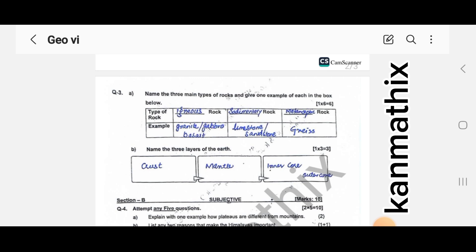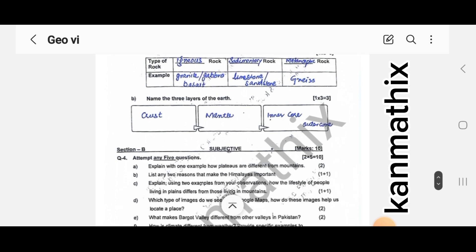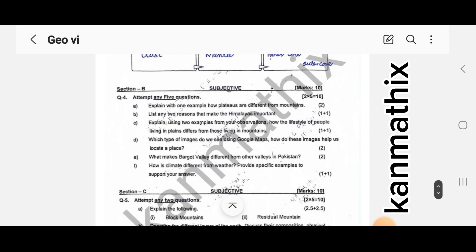You had to mention the type of rock and then name the 3 layers of the earth. The three layers of the earth are here. You had to mention them. If you are mentioning 4 or 3, whichever is correct will be acceptable. Then Section B had 5 questions and each question carries 2 marks. Short answers had to be given here.